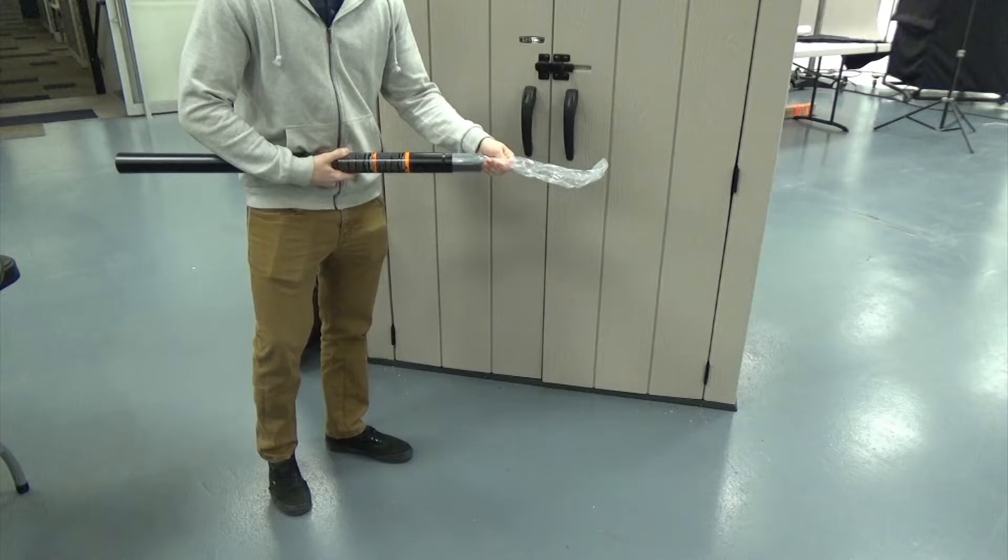In this instructional video we will be assembling the pole of the Lifetime Youth Basketball System. Your system may look different than the model shown, but the steps performed will still apply.